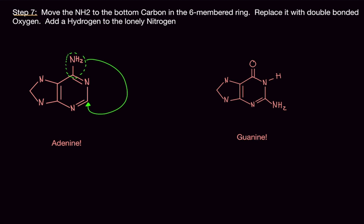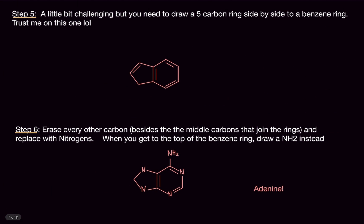Now here's what we're going to do for guanine. Take the NH2 group you just drew and move it to the bottom carbon on the six-membered ring — the only other carbon available. Then replace the NH2 at the top with a double-bonded oxygen, and add a hydrogen to the lonely nitrogen there. And that is guanine. Guanine is by far the hardest one. Just remember: move the NH2 over, put an oxygen and a hydrogen, and you're set. Adenine is basically just an NH2 group on a purine.